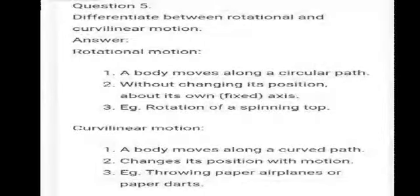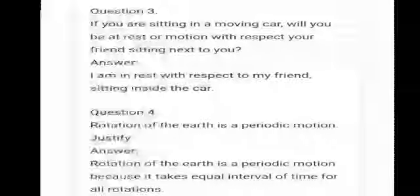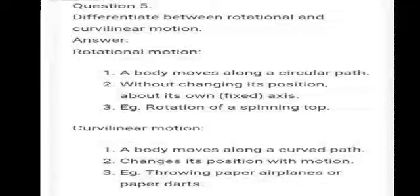Question five: differentiate between rotational and circular motion. Rotational motion: the body moves along a circular path without changing its position, rotating about its own axis. Example: rotation of a spinning top. Circular motion: the body moves along a curved path and changes its position. Example: throwing a paper arrow or paper planes.